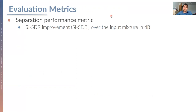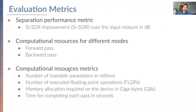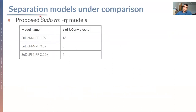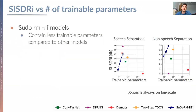To evaluate the SudoRaMRF models and compare with the literature, we use the scale-invariant signal-to-distortion ratio improvement over the input mixture as our separation performance metric. We measure computational resources for two modes: a forward pass on CPU and a backward pass on GPU. We measure trainable parameters in millions, FLOPs in gigaflops, memory allocation in gigabytes, and execution time in seconds. The proposed MRF models are parameterized by the number of stacked U-Net blocks — the full model uses 16 blocks and the smallest uses 4.